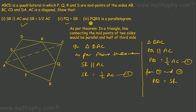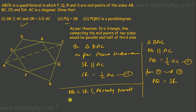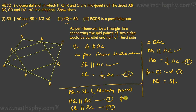At the end, we have to prove PQRS is a parallelogram. We have PQ equal to SR, already proved. We also have PQ parallel to AC from triangle BAC, and SR parallel to AC from triangle DAC. I take PQ ∥ AC as equation 3 and SR ∥ AC as equation 4. From equations 3 and 4, since PQ is parallel to AC and SR is parallel to AC, PQ will be parallel to SR.